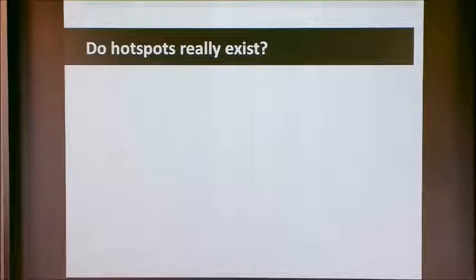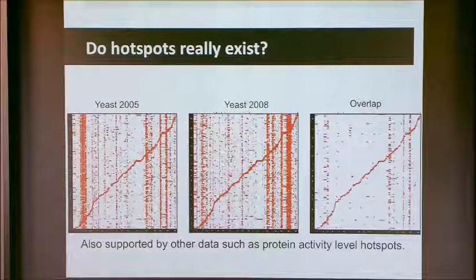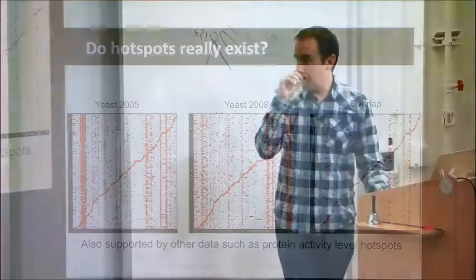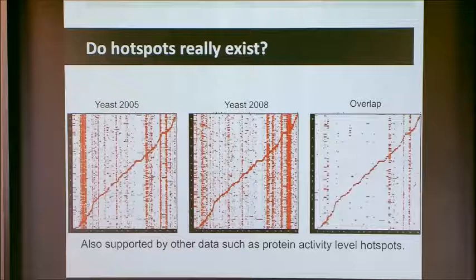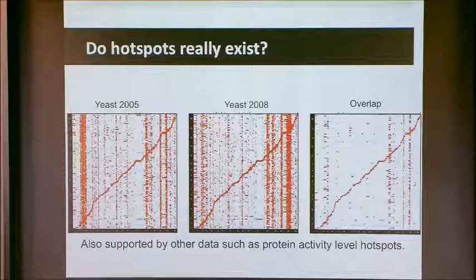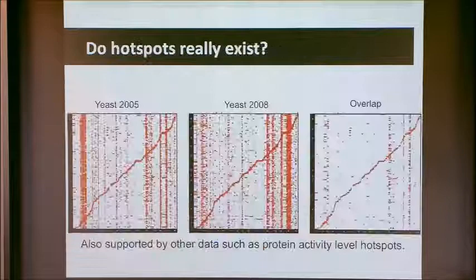Right around the same time, Leonid Kruglyak — who collected the original data — moved from Seattle to Princeton and redid his experiment. Looking at the two datasets from 2005 and 2008 and examining their overlap, there actually are real hotspots that are shared. There's also protein activity level data measured in the same places. So this proves that true hotspots do exist, but ICE kind of eliminates them.